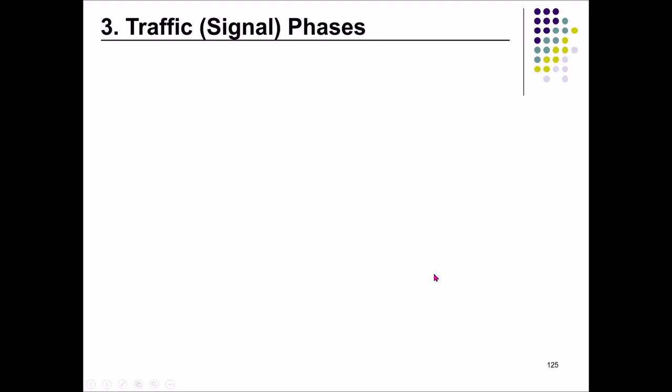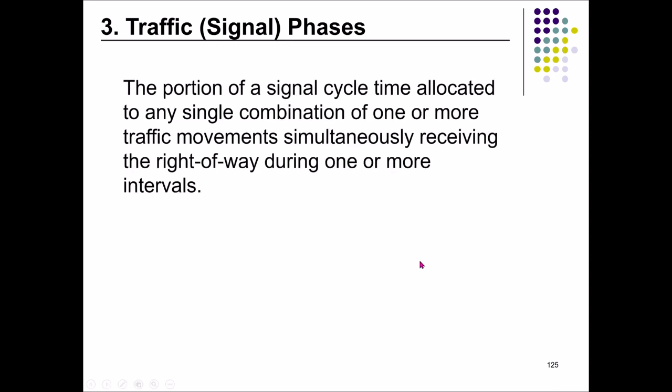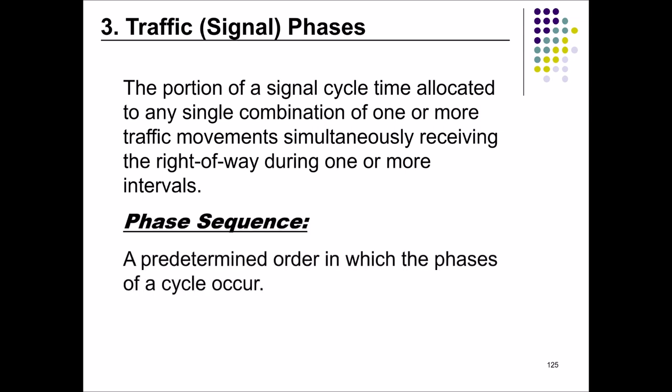The third term is traffic signal phases. A traffic signal phase is the portion of a signal cycle time allocated to any single combination of one or more traffic movements simultaneously receiving the right of way during one or more intervals. The phase sequence is a predetermined order in which the phases of a cycle occur.